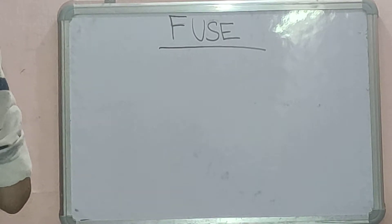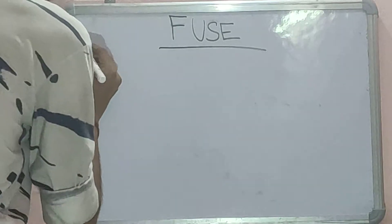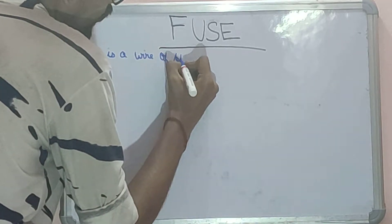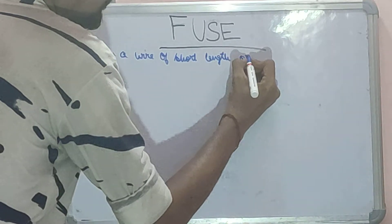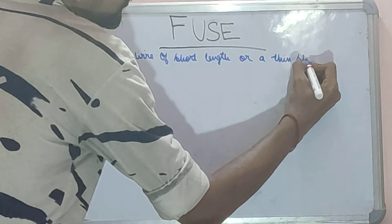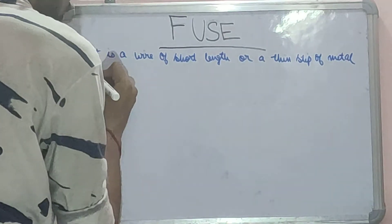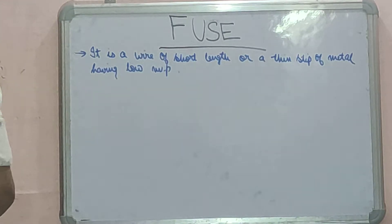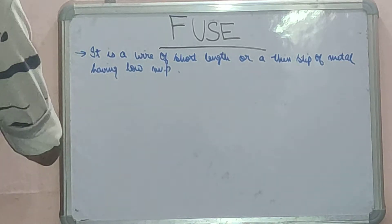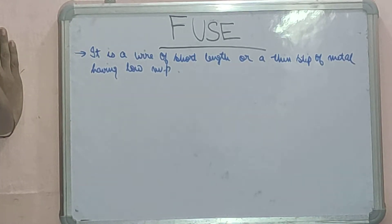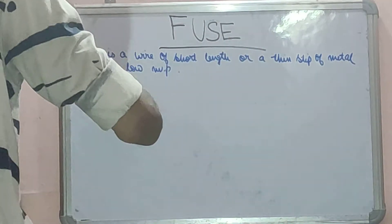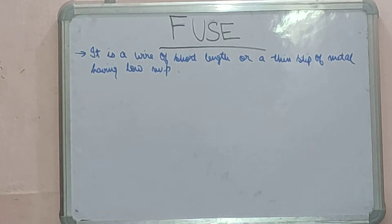Fuse is a wire of short length or a thin strip of metal having low melting point. Low melting point is very important, remember that. The time for blowing out of a fuse depends upon the magnitude of the excess large current. The larger the current, the more rapidly will the fuse blow out. When excess current comes in, because of I²R excess heating, the low melting point forces the fuse to melt or blow. This is basically how the fuse works.